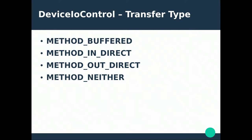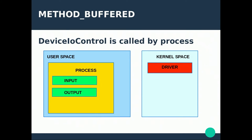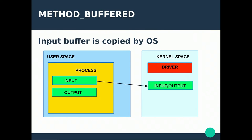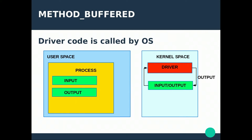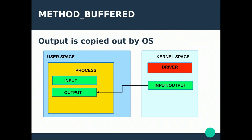If we have method buffered and DeviceIoControl is called by the process, the input buffer is copied by the OS into kernel space — user space can't directly touch stuff inside the kernel. Then the driver code is called by the operating system. The input buffer inside the kernel is given to the driver, and the driver writes output to the same buffer. After that, the output is copied back out by the operating system. So the OS moves data to its own controlled area, lets the driver handle it, and then moves the output back.